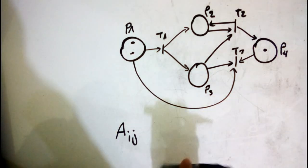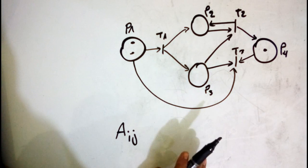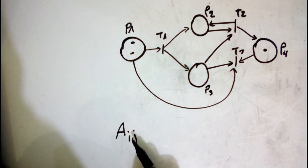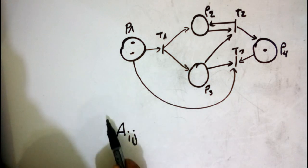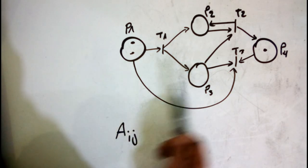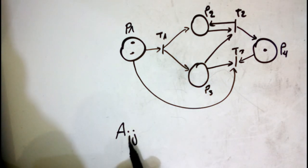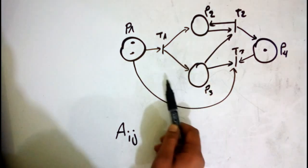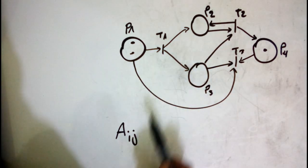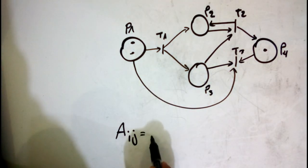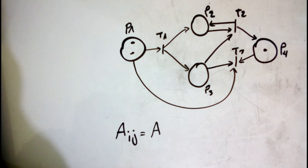Hello, I am Najib from Algeria and in this video I want to show you how to create the incidence matrix of a given Petri net. The incidence matrix has dimensions I by G, where I represents the number of transitions and G represents the number of places.